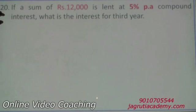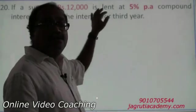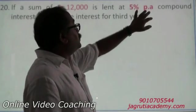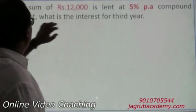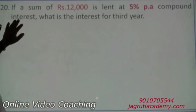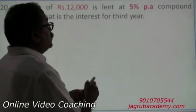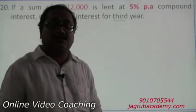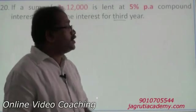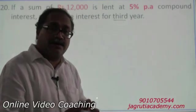Now question number 20: if a sum of rupees 12,000 is lent at 5% per annum compound interest, what is the interest for the third year? Note — it's not asking for the interest after three years, but specifically the interest for the third year.